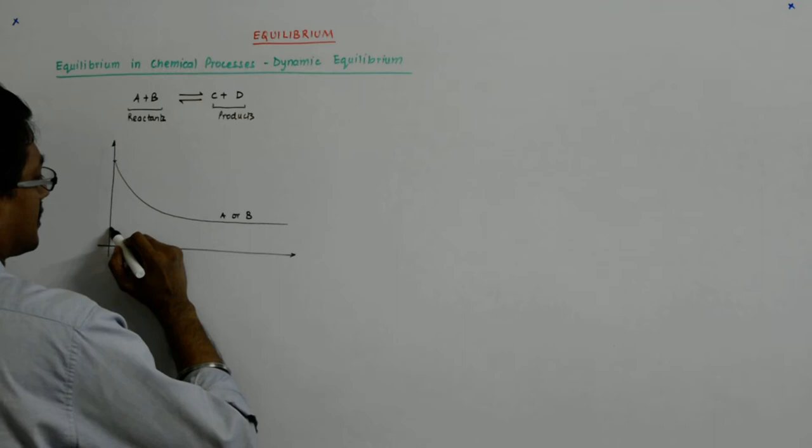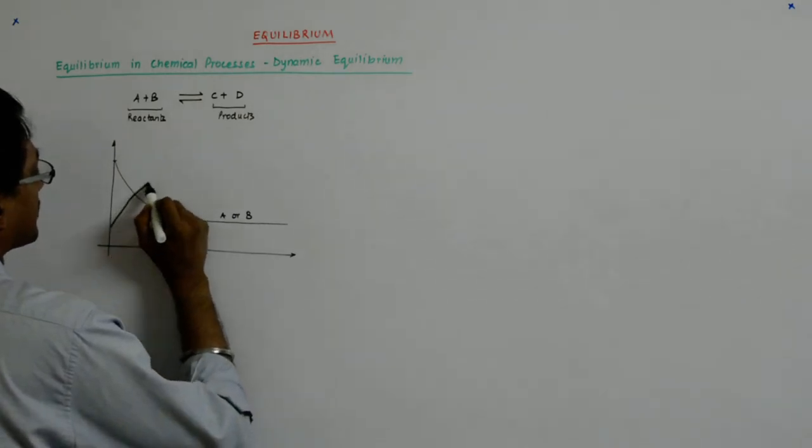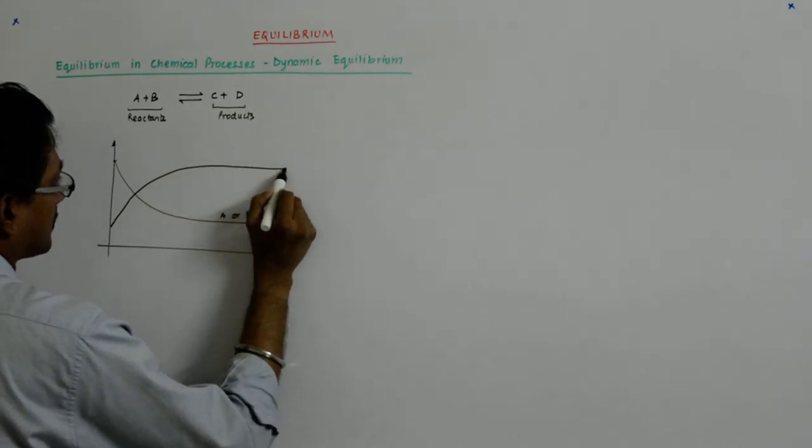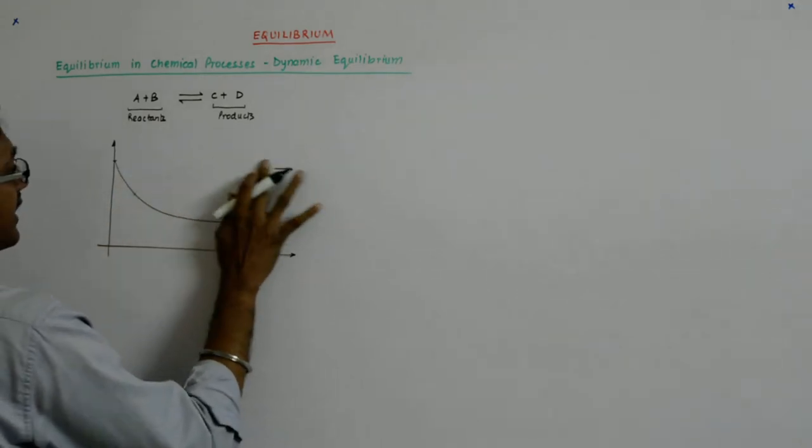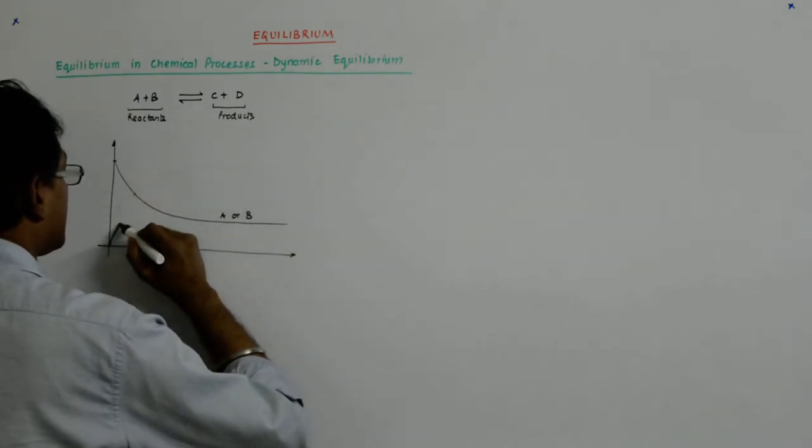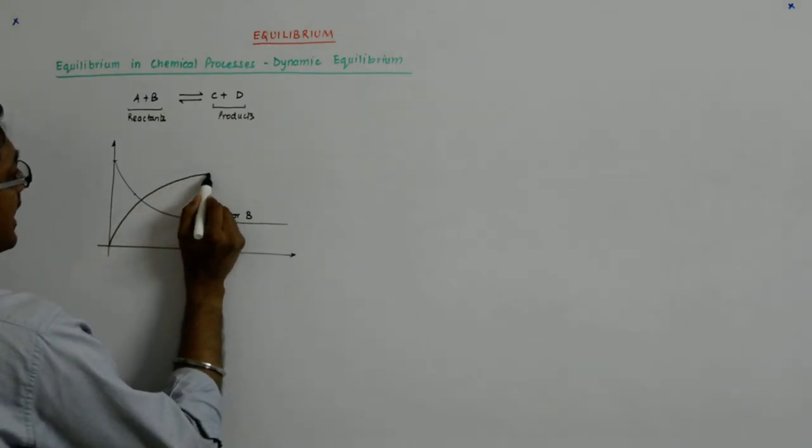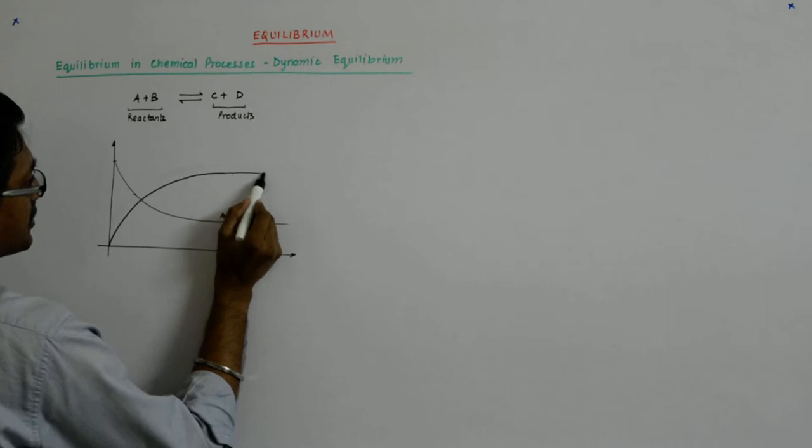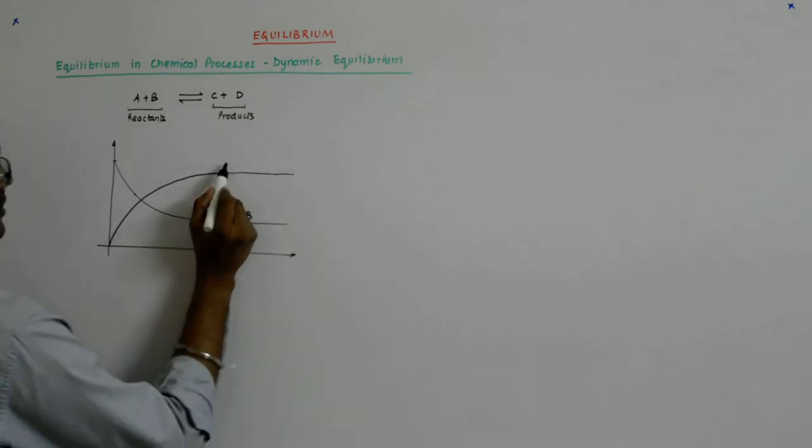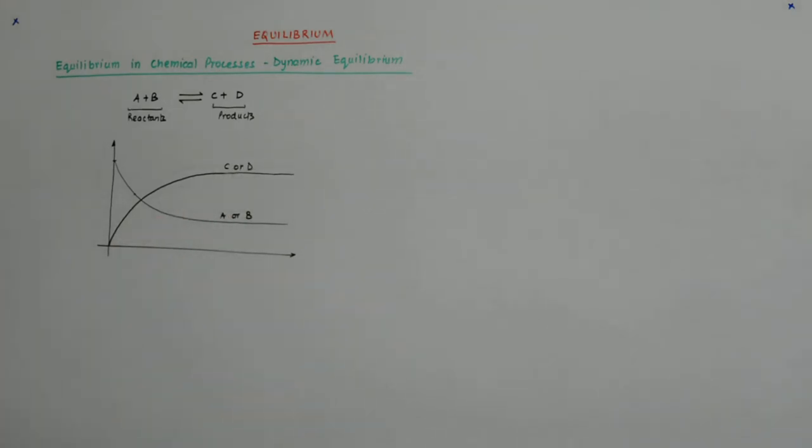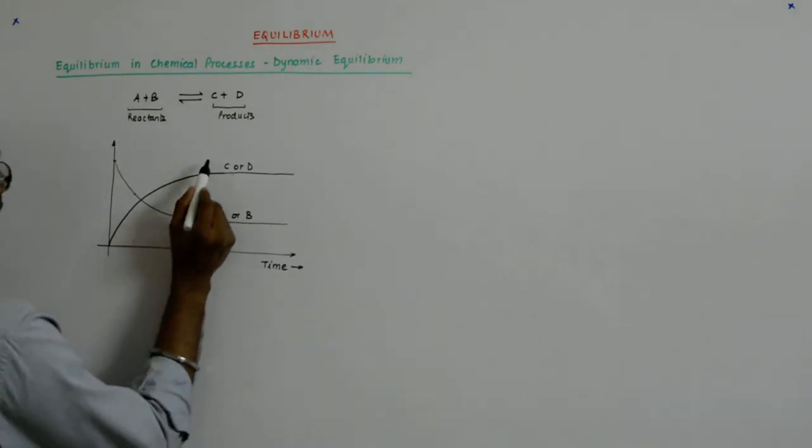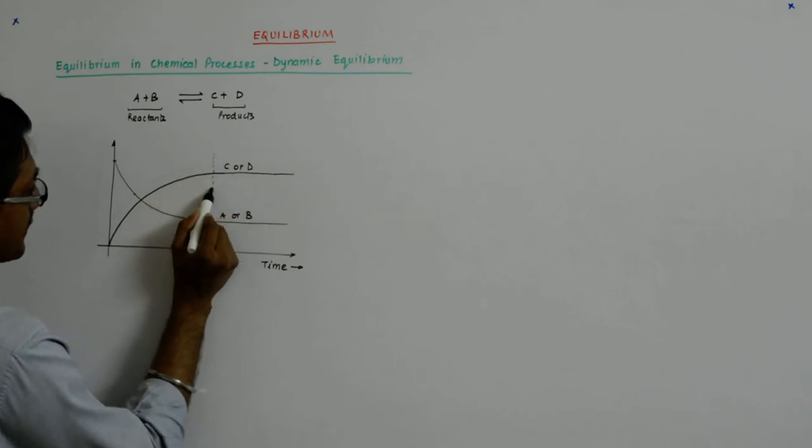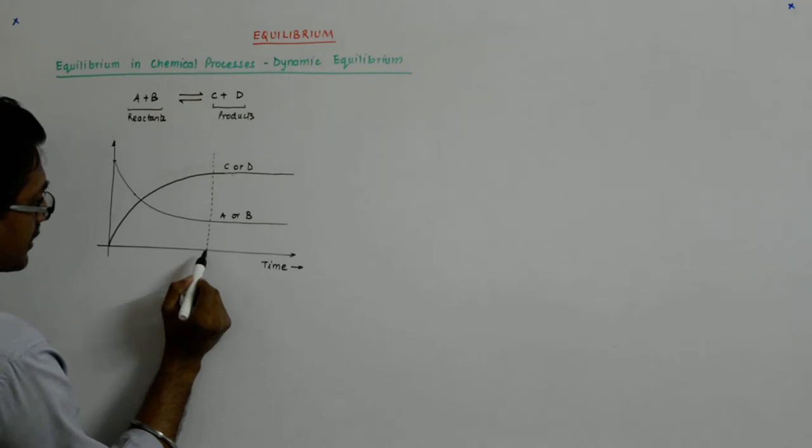Similarly, this is A or B. Here, if I track the product, it'll have to start from the origin because initially I'm assuming there is nothing. Initially there is only the reactant. So this is C or D. Any of the product you can track, and this obviously is time. This we are observing with time.